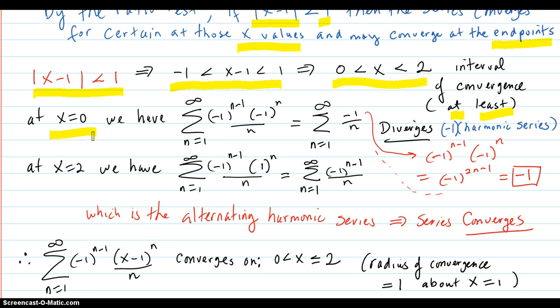Let's check out the endpoints. At x equals 0, you plug in x equal to 0 and you get this series, which equals this. And that diverges because that's just negative 1 times the harmonic series, which diverges.